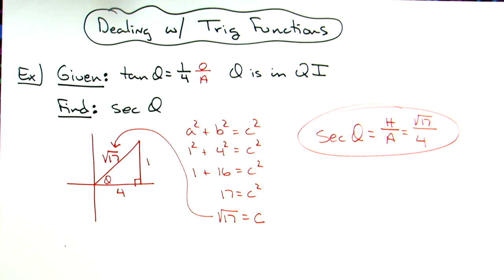So pretty much just a straightforward question there dealing with your trig functions. And like I said, I chose to do the bow tie triangle and use a little bit of right triangle trig. You could have also used the Pythagorean identities as well and solved it that way.